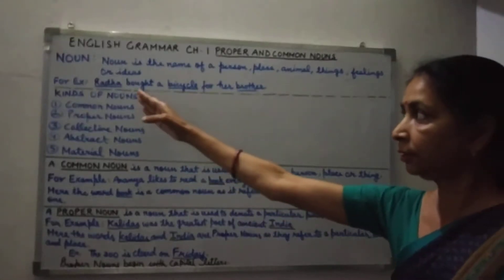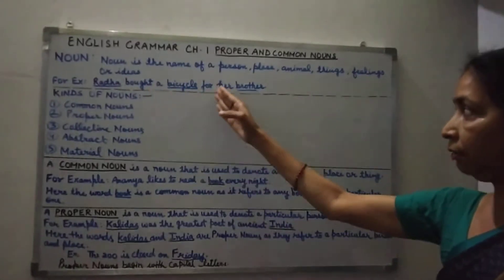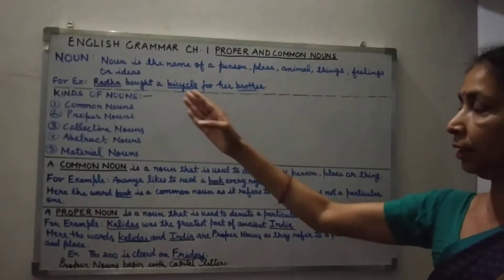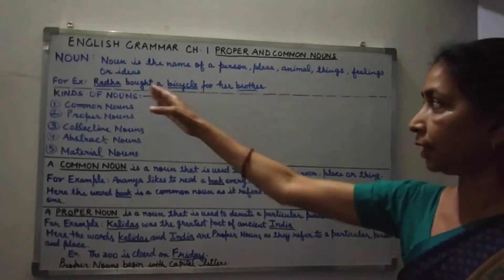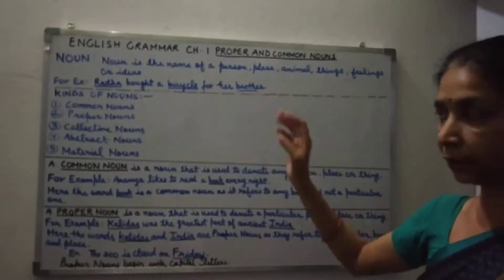For example: Radha bought a bicycle for her brother. Here 3 nouns are there: Radha, bicycle, and brother.